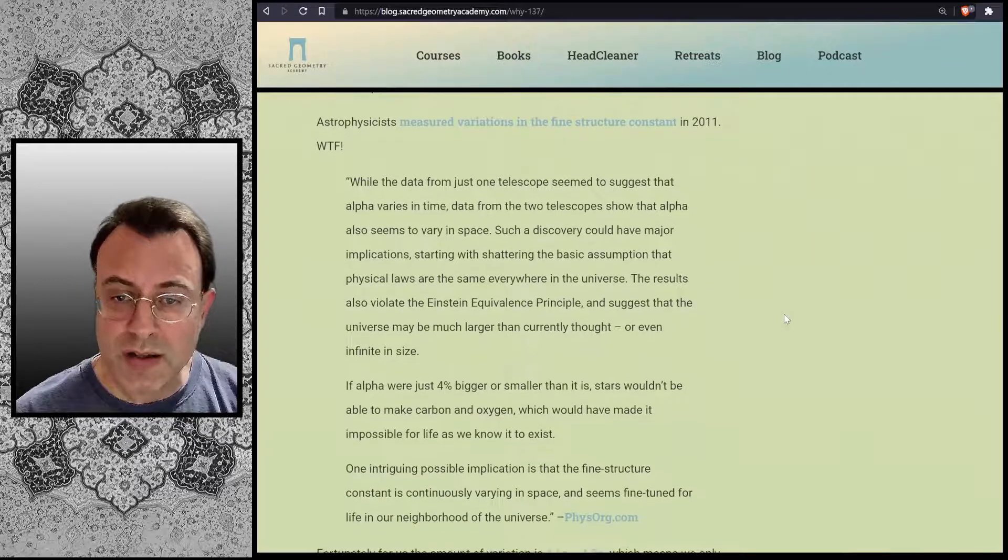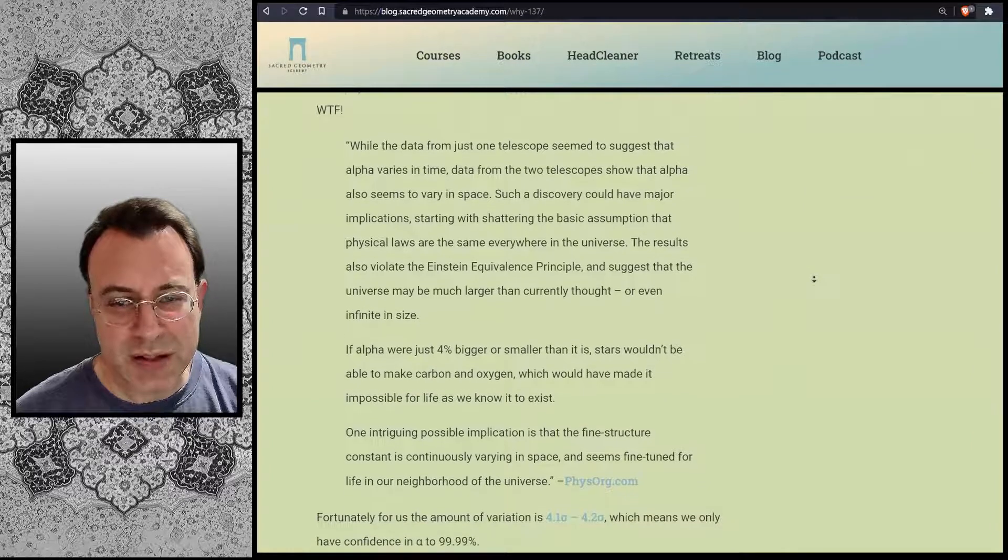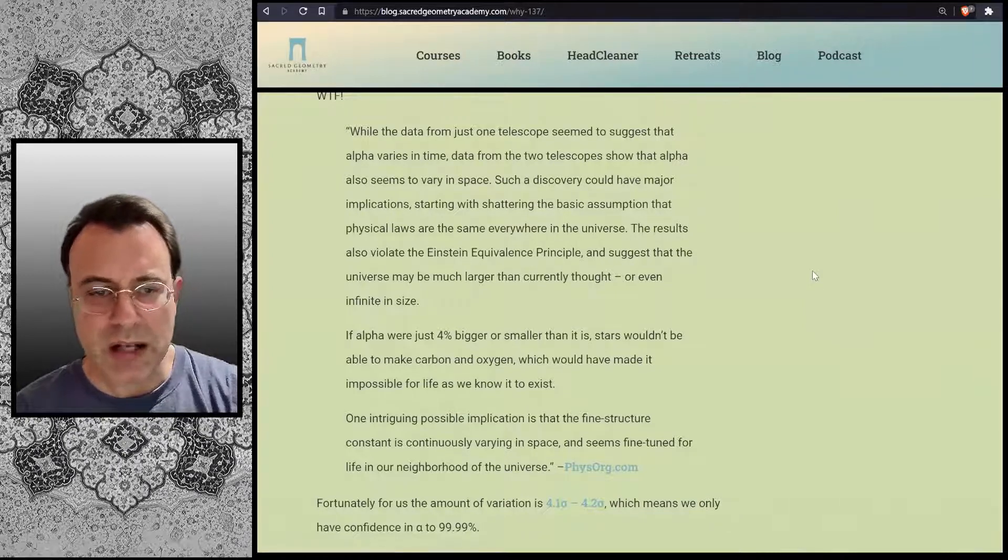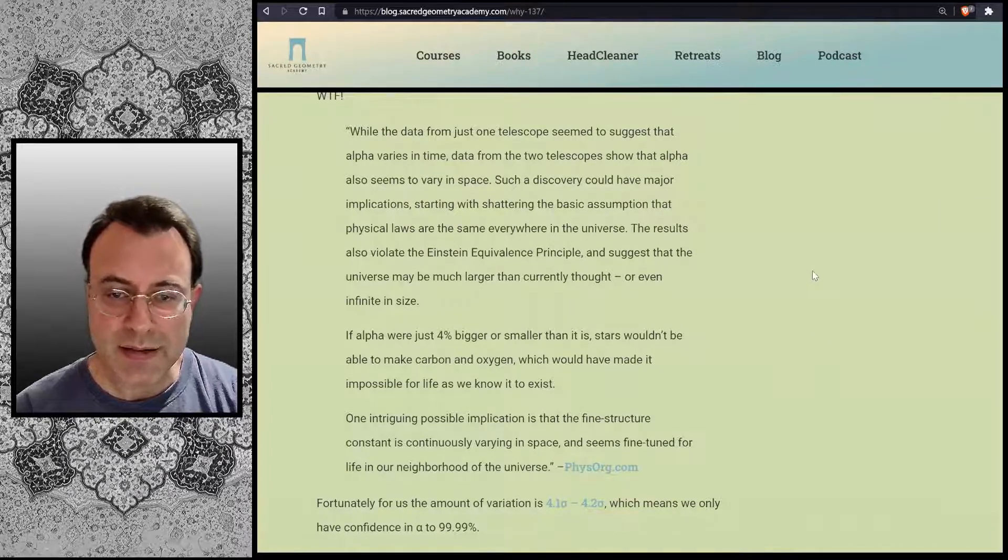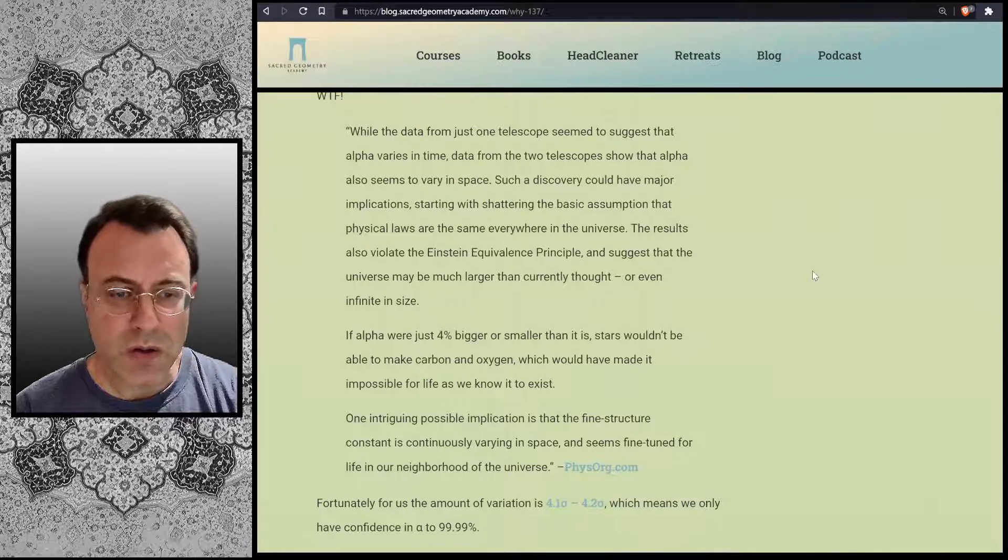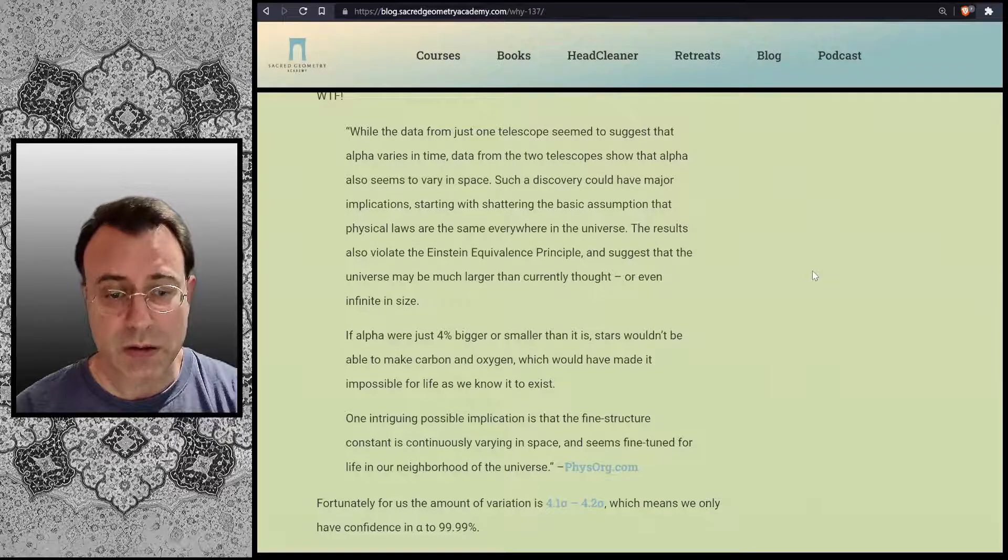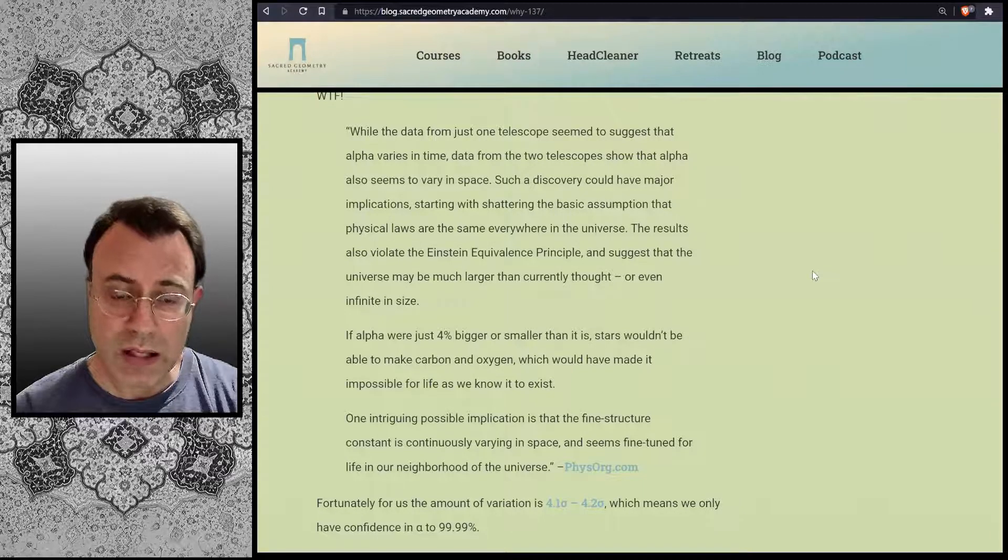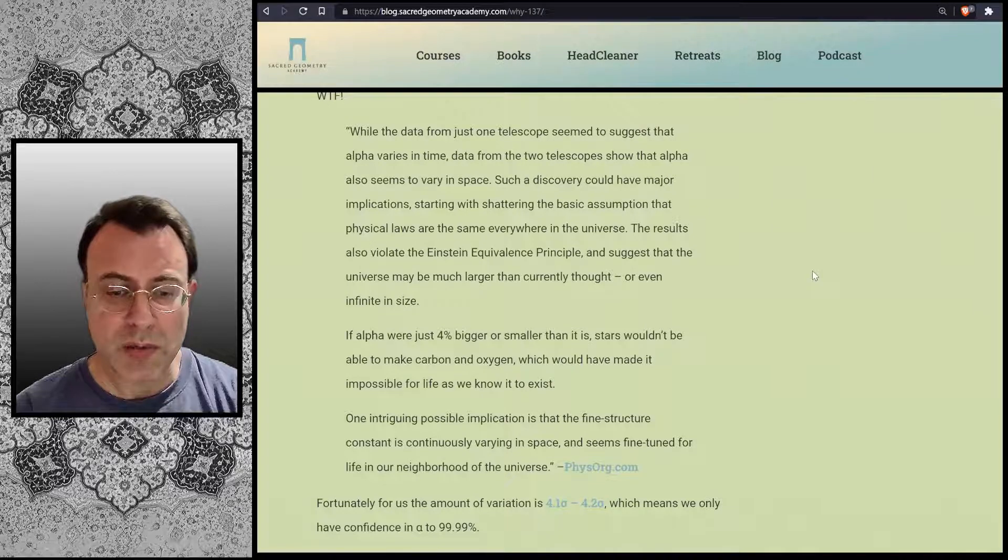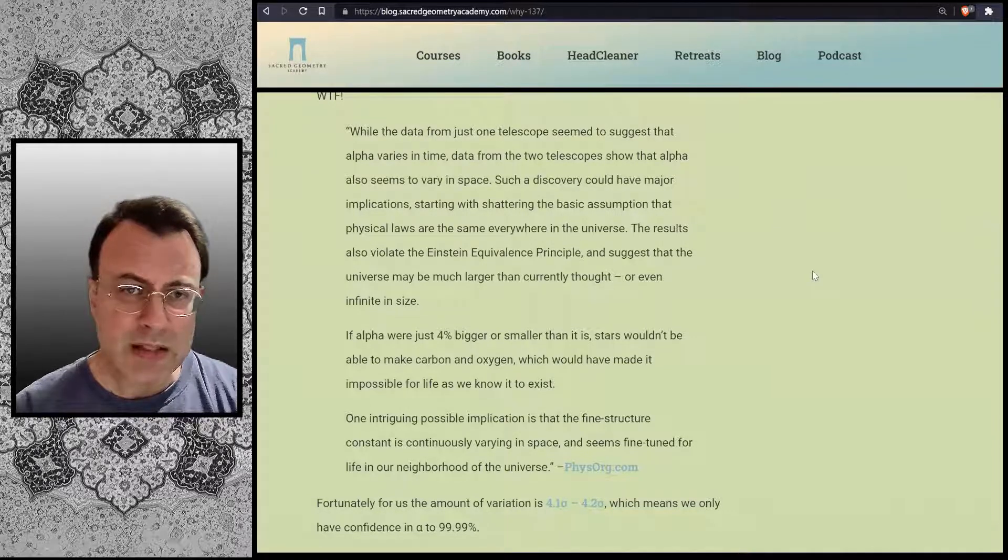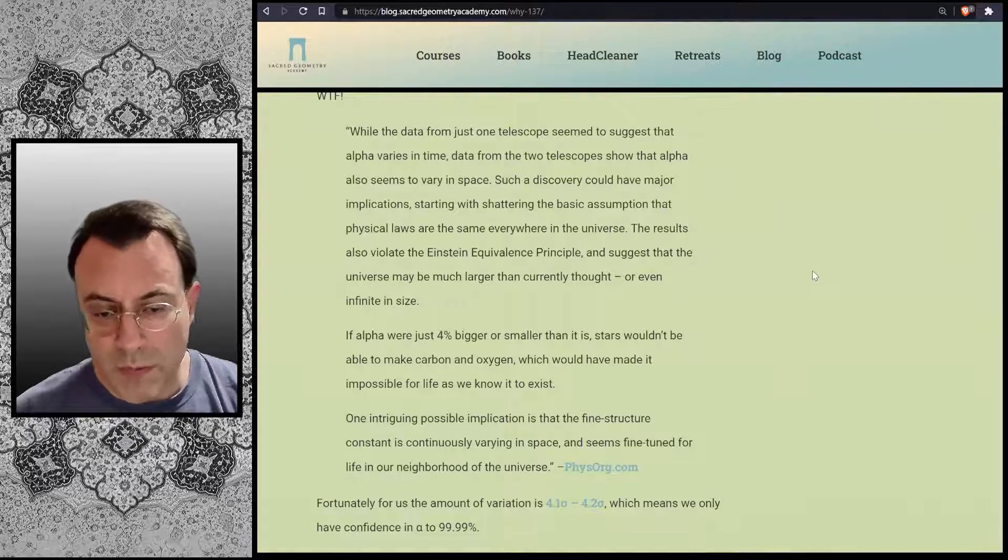Astrophysicists measured variations in the fine structure constant in 2011. WTF. While the data from just one telescope seem to suggest that alpha varies in time, data from the two telescopes shows that alpha also seems to vary in space. Such a discovery could have major implications, starting with shattering the basic assumption that physical laws are the same everywhere in the universe. The results also violate the Einstein equivalence principle, and suggest that the universe may be much larger than currently thought or even infinite in size. If alpha were just 4% bigger or smaller than it is, stars wouldn't be able to make carbon and oxygen, which would have made it impossible for life as we know it to exist. One intriguing possible implication is that the fine structure constant is continuously varying in space, and seems fine-tuned for life in our neighborhood of the universe. From PhysOrg.com.